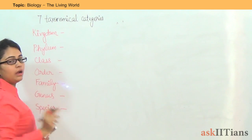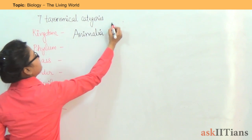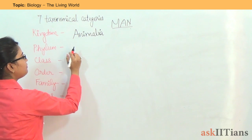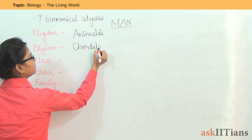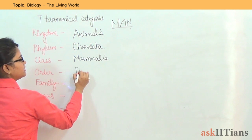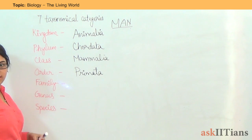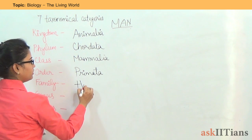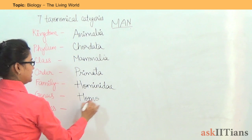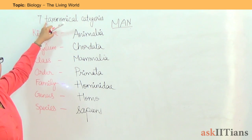We are animals. So the kingdom is Animalia. The phylum of man is Chordata. The class is Mammalia — we are all mammals. The order is Primata. Based on different characteristics, these categories are given. The family is Hominidae. The genus is Homo. And the species is sapiens. This is how man is classified under the seven taxonomical categories.